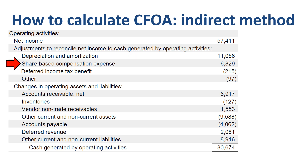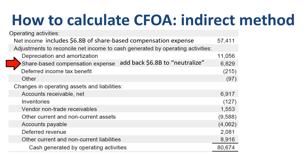A similar story applies to share-based compensation expense. This is an expense that needs to be deducted to calculate net income correctly. But since share-based compensation is paid in shares and not in cash, the effect needs to be neutralized for cash flow purposes. Minus $6.8 billion in the income statement plus $6.8 billion added back sums to zero.